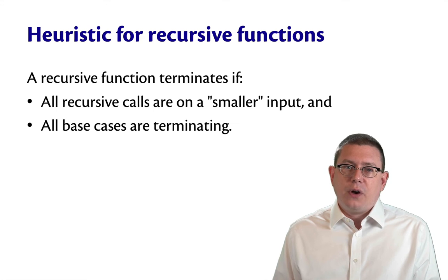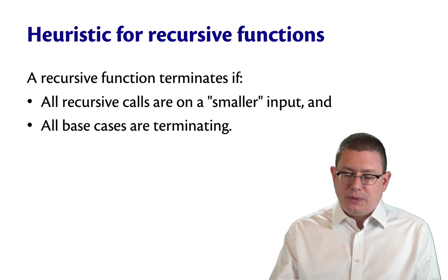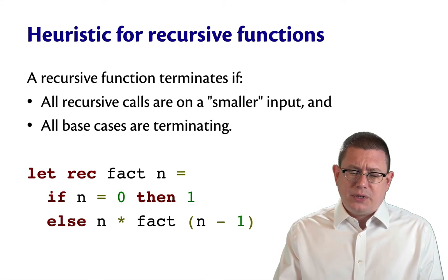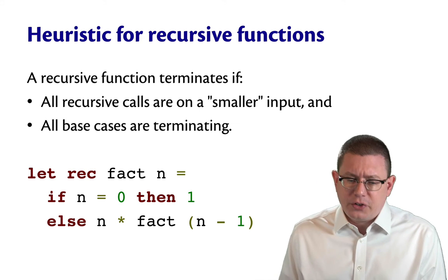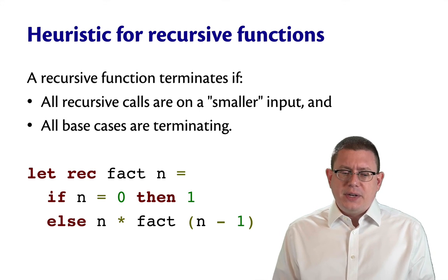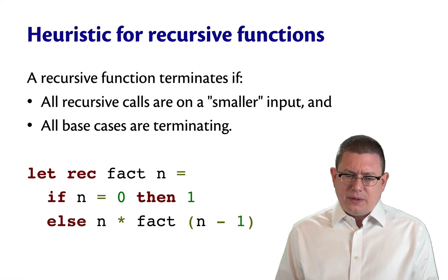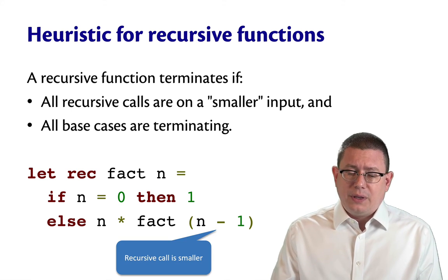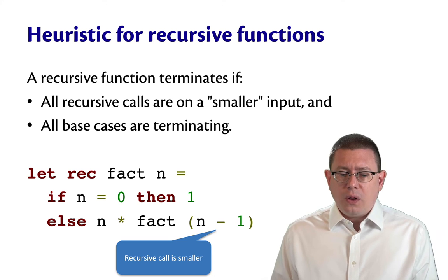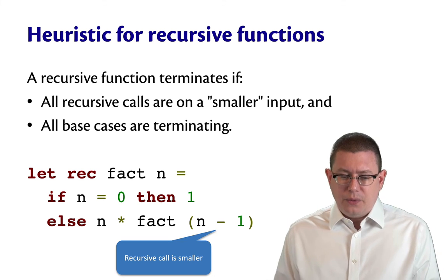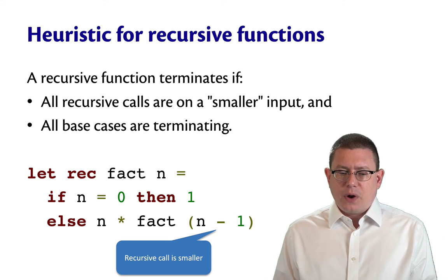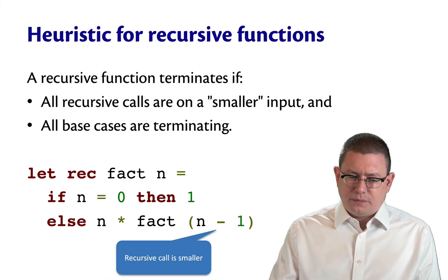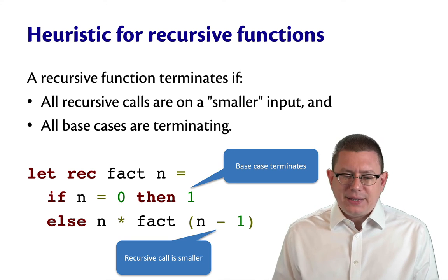Now, I need to be careful here about what I mean by these terms. Let me give you an example, though, first. What about the factorial function? We've looked at this many times before. Are we guaranteed that it terminates? Well, here the recursive call is on a smaller value. Instead of calling on n, we're calling on n minus 1. And here the base case terminates.